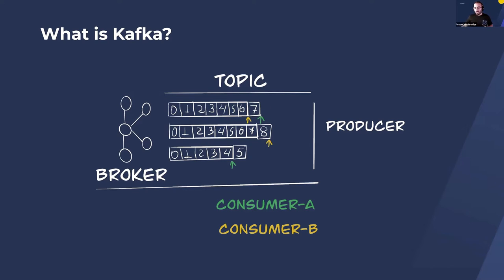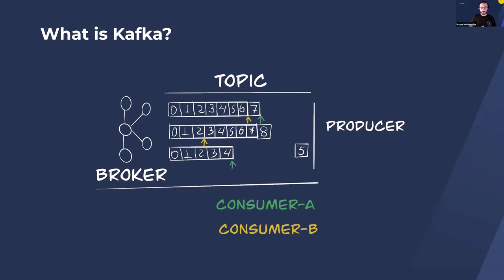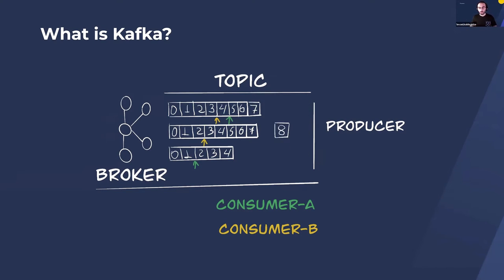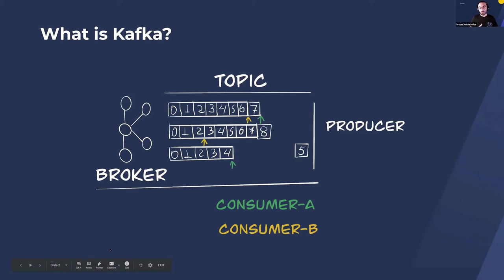On the Kafka side we have different components. On the client side we have producers and consumers, and on the management and server side we have a Kafka broker. The Kafka broker is responsible for managing the clients as well as storing the data on the disks. Usually in production you have many Kafka brokers. On the broker side we also have the notion of a topic, which is a logical abstraction on top of the data stored on the Kafka brokers.